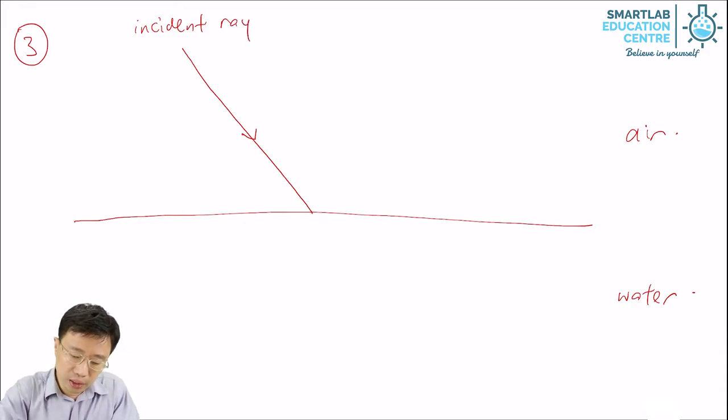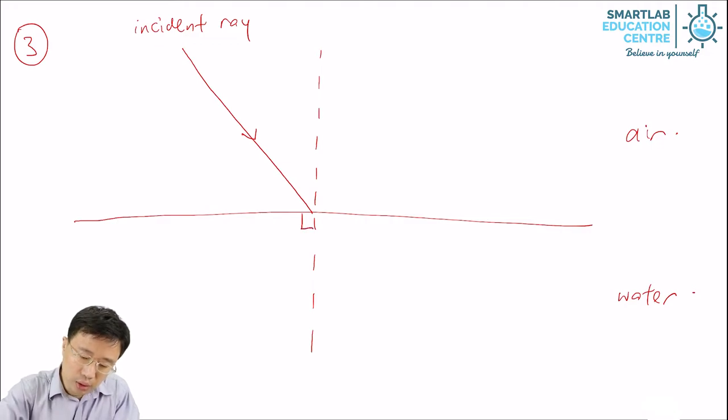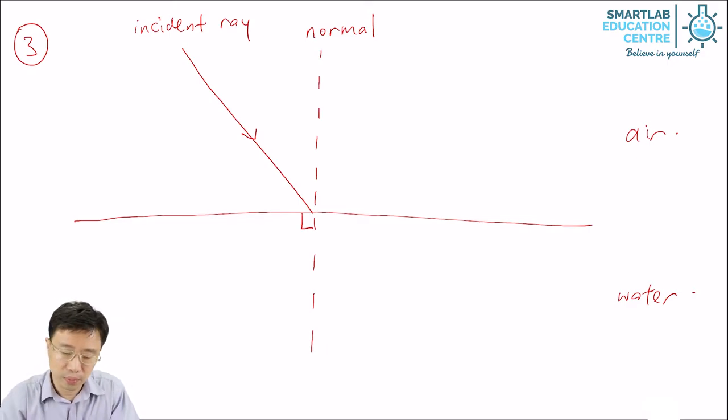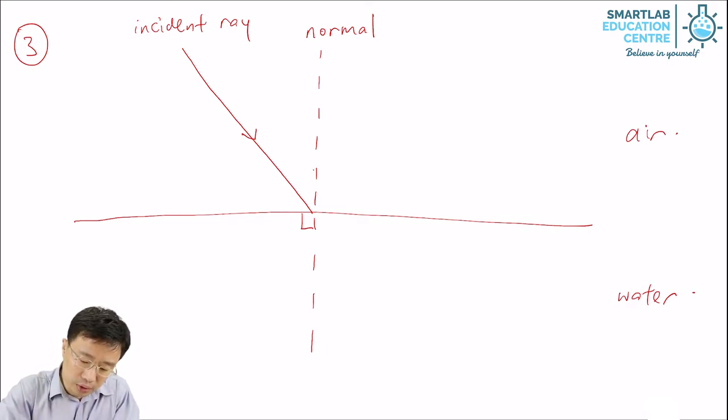Where the ray of light hits the separation, we can draw a dotted line to the separation. This dotted line is called the normal, it is an imaginary line. Between the incident ray and the normal is angle i, angle of incidence.